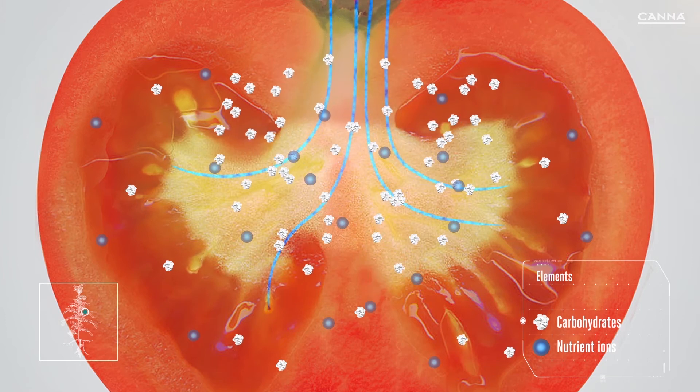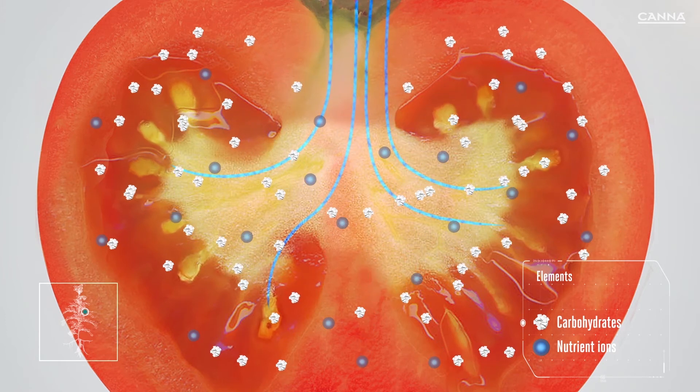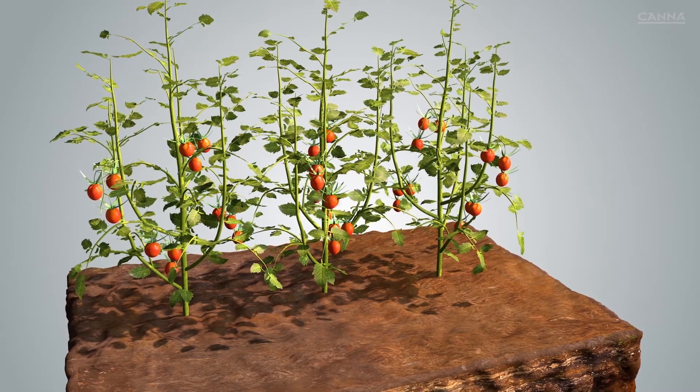When you also feed the plant with Canna Boost, the proportion of sugars in the fruit rises, making the end product taste sweeter.